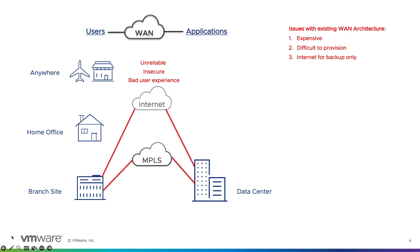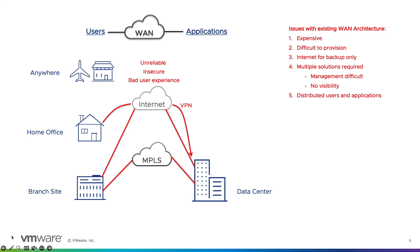At home offices, employees used a VPN solution to connect back to their applications in the data center. As you can see, multiple solutions were required to build and maintain the wide area network, making management difficult with so many moving components. Being a multi-solution environment, there was also no end-to-end visibility — a significant lack of visibility.